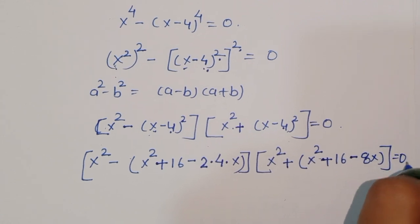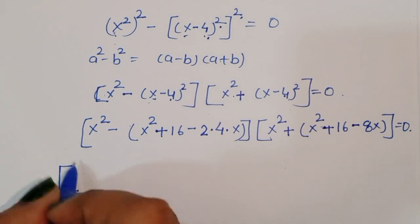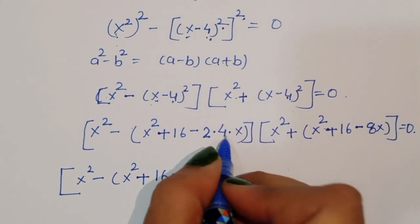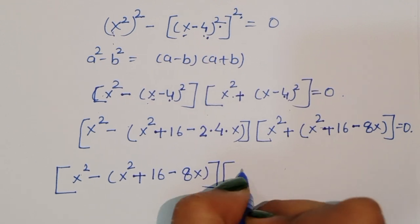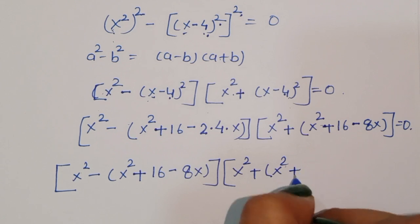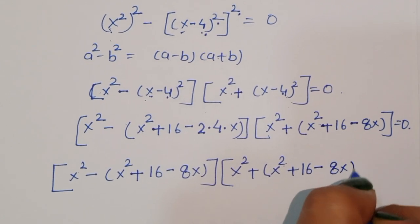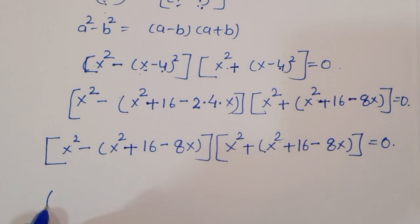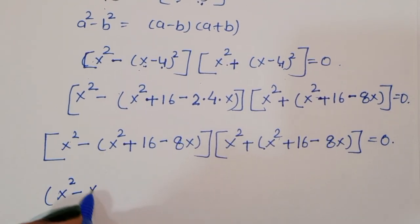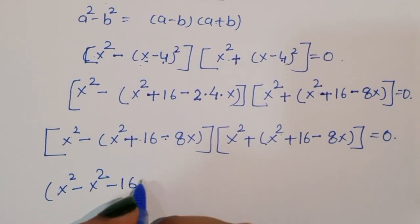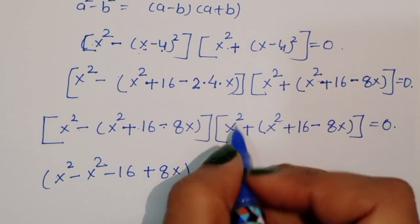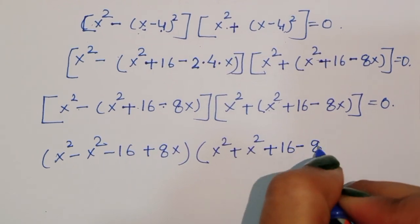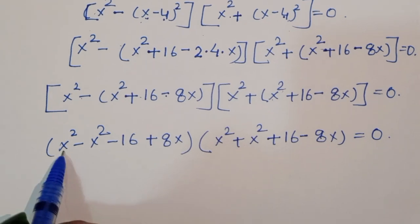So we get: x square minus x square minus 16 plus 8x, times x square plus x square plus 16 minus 8x, is equal to 0. Opening the brackets, in the first bracket x square minus x square cancels, leaving 8x minus 16. In the second bracket we get 2x square plus 16 minus 8x.